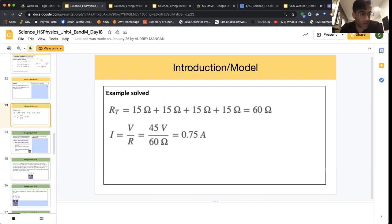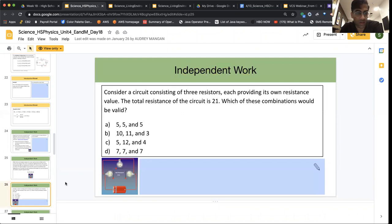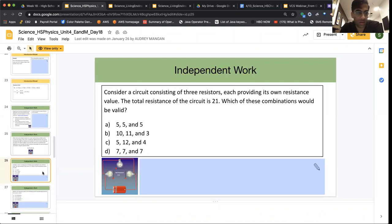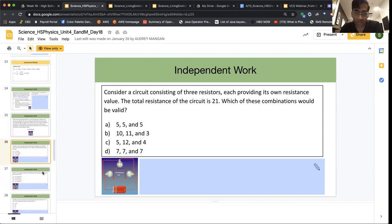So I'm going to walk you through one of the independent work examples to close. If we're considering a circuit consisting of three resistors, each providing its own resistance value, the total resistance is 21. Which of these combinations would be valid?